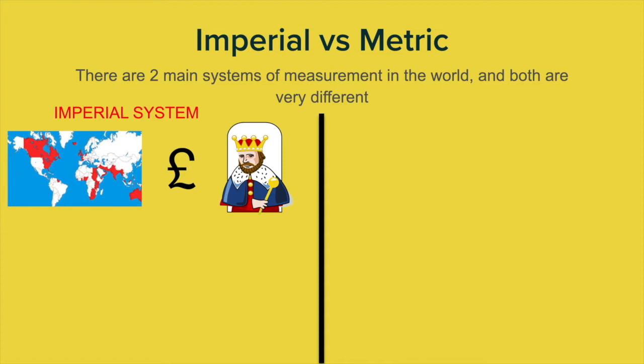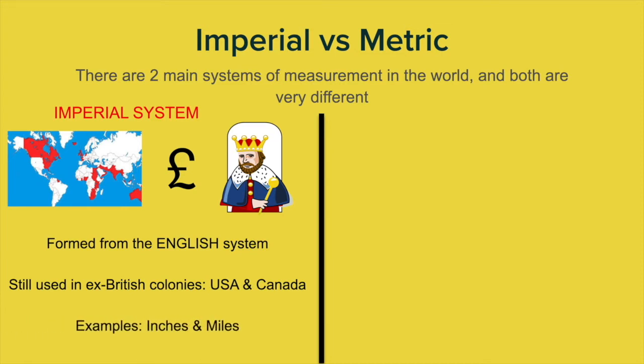It's a very interesting system because it actually is based upon what we call the English system. And that English system used measurements basically a lot of them like on body parts. So you would take your foot, and that would be a measurement. Later when we talk about foot or feet, a foot is the size of a human male adult foot. The imperial system is still used in some ex-British colonies. Obviously, it's still used in England. There's a bit of a mix in England, but it is still used. And if you go to the USA and Canada, the imperial system is their main measuring system. Some examples you might have heard of are inches and miles.